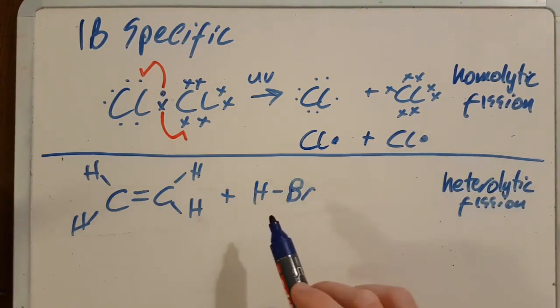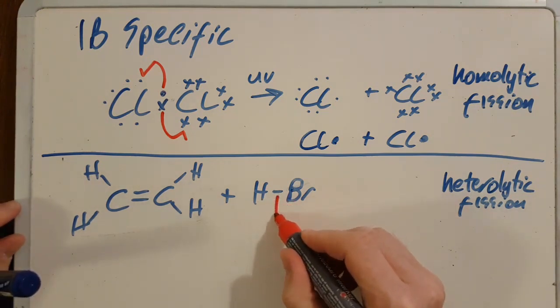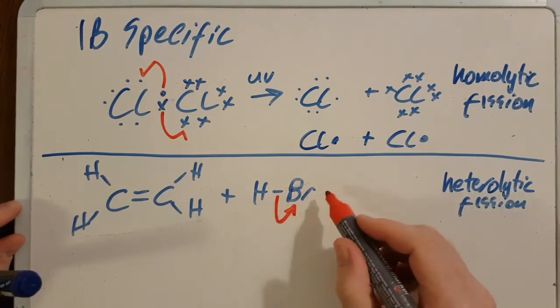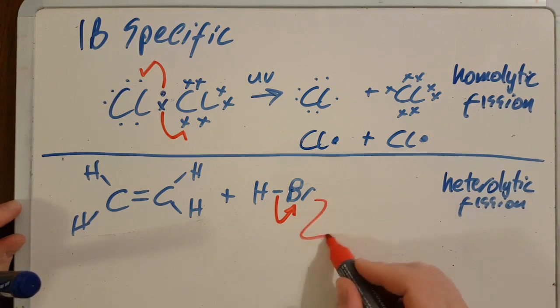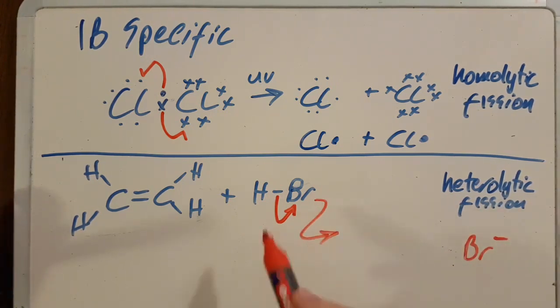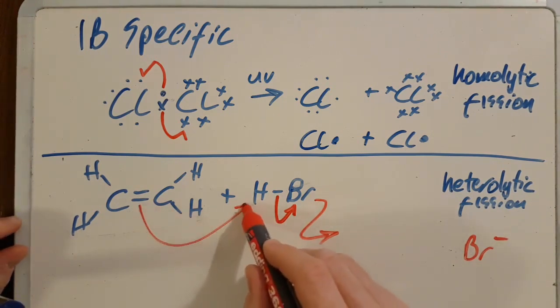So if you're going to add hydrogen bromide to an alkene, what happens is the electrons in the bond between the hydrogen and the bromine are attracted towards the more electronegative bromine and that turns into Br minus. And then the electrons in the pi will steal that hydrogen.